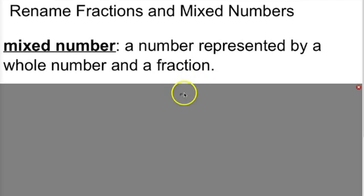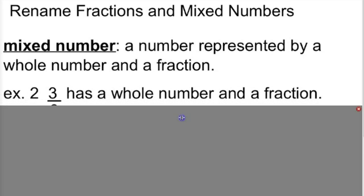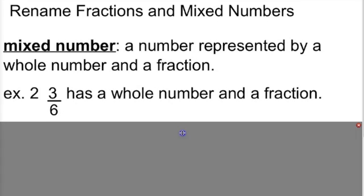Okay, now that you've done that, let's get an example of a mixed number. We are familiar with looking at mixed numbers. 2 and 3/6 is a mixed number, for example, because 2 is the whole number and 3/6 is the fraction. When we put this together, we call it a mixed number.